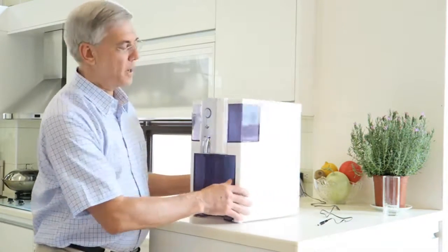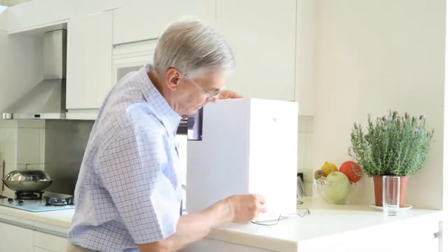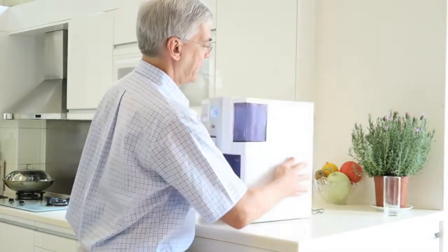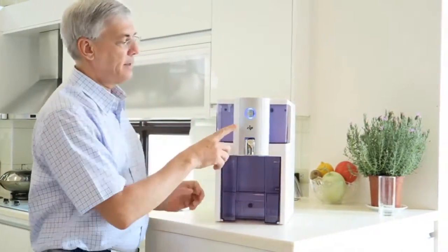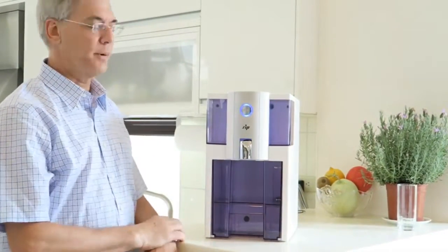Once you've removed the filter from the box and you've plugged the transformer in the wall and plugged the power cord into the back, you'll see that the indicator light on the control panel is lit blue. This shows that the system is ready to run.